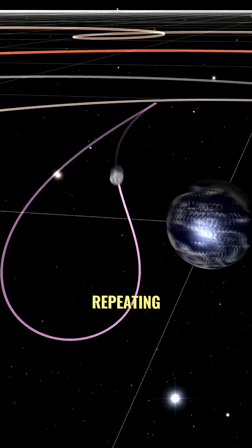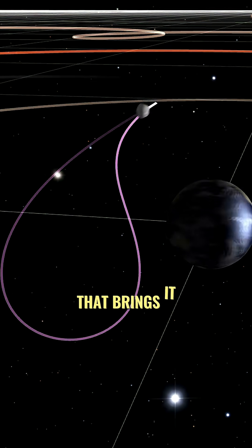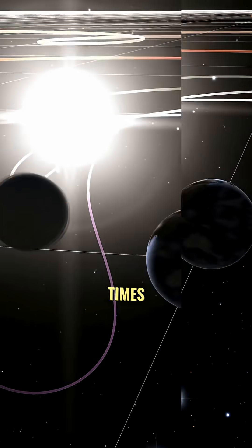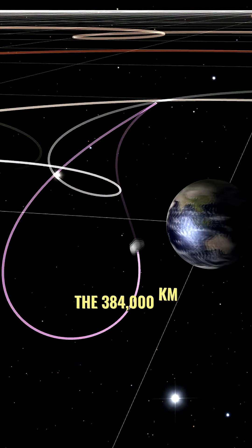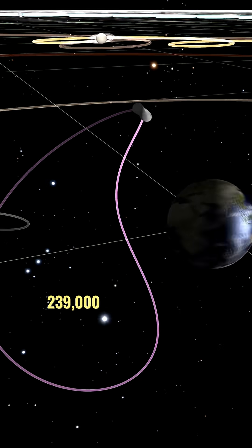It circles the Earth in a repeating corkscrew-like trajectory that brings it no closer than 40 to 100 times the 384,000 kilometers (239,000 miles) distance of our more familiar moon.